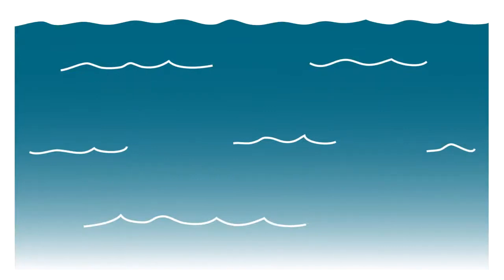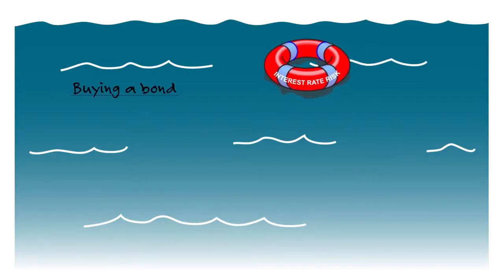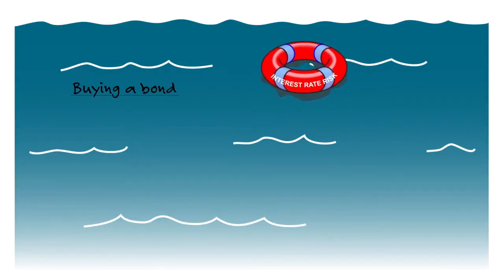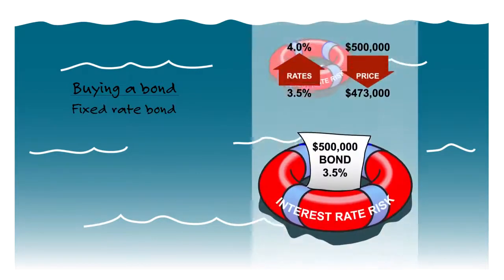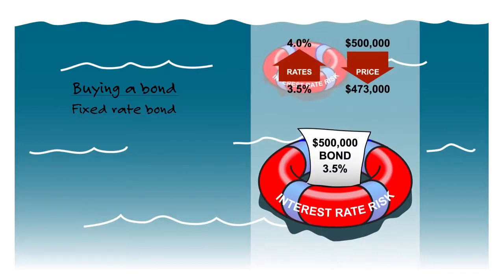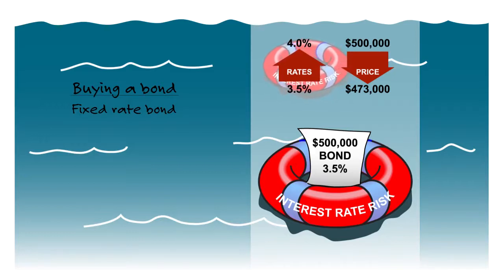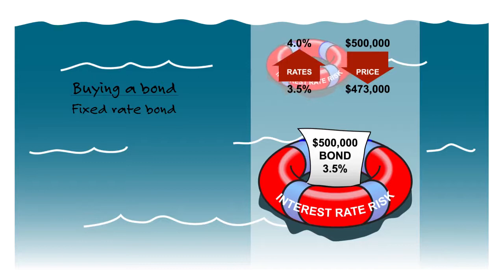Now we want to be able to identify the different types of risk. Interest rate risk — what is interest rate risk? Well, if you buy a bond, you're really a lender. And if it's a fixed rate bond, you run the risk that if interest rates go up, the value of your investment goes down. If newly issued debt with the exact same credit rating is now paying a higher rate, no one's going to want your bond unless you discount the price. So interest rate risk is the risk that you've invested in a fixed rate bond and that interest rates are going to go up, and the value of your bond would go down.